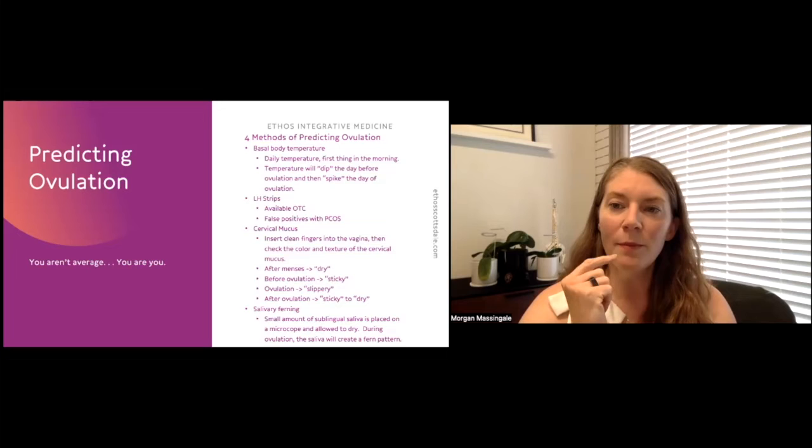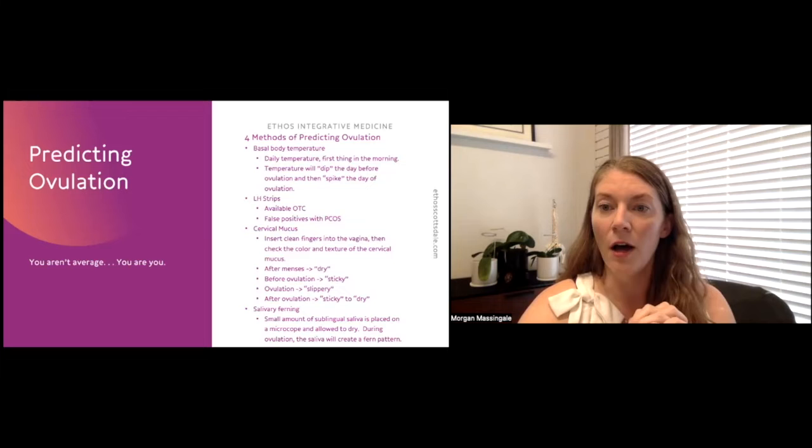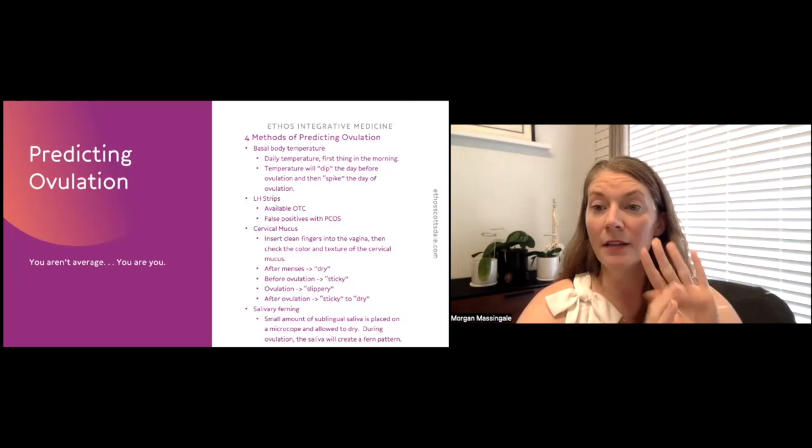But you can actually take a small amount of sublingual saliva. So saliva from just under your tongue and dot it onto a microscope, allow it to dry, and then look at the pattern of the dried saliva on the microscope. During ovulation, the saliva will actually create a fern pattern. So just like the leaves of a fern plant.